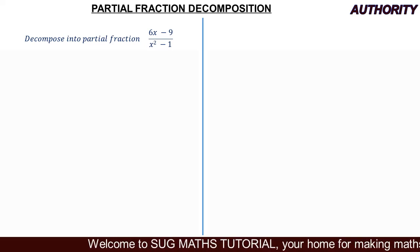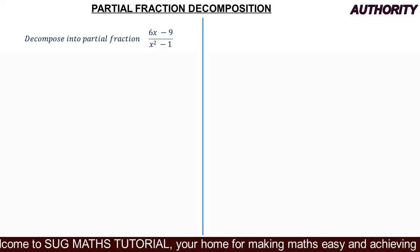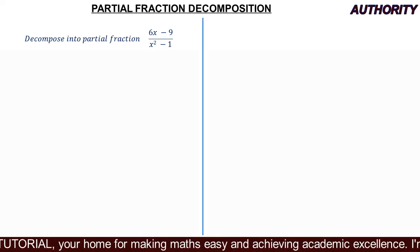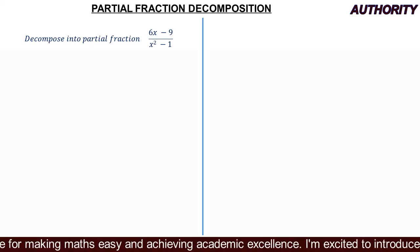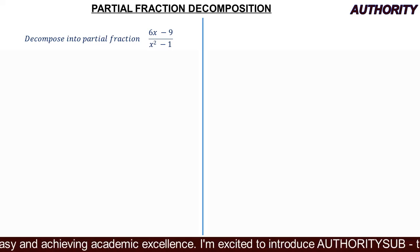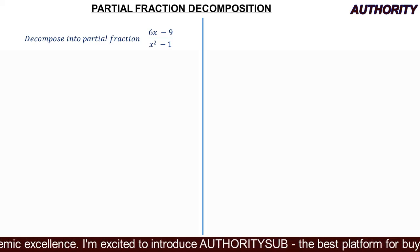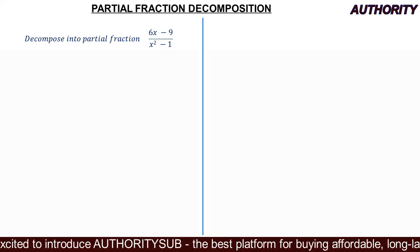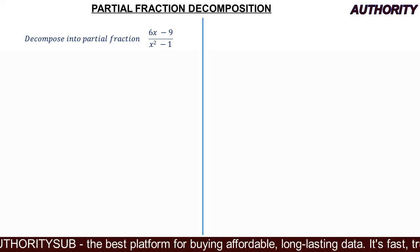Let's take it step by step on how to decompose into partial fractions. In decomposing into partial fractions, we have some guidelines — about five of them. The first one says we must check and make sure that the rational polynomial is proper. What do we mean? The degree of the denominator must be higher than that of the numerator. Looking at the question, the degree of the numerator is 1 and the degree of the denominator is 2, so condition number one is satisfied.